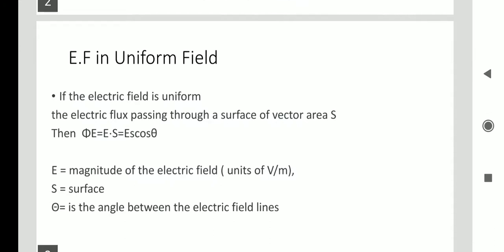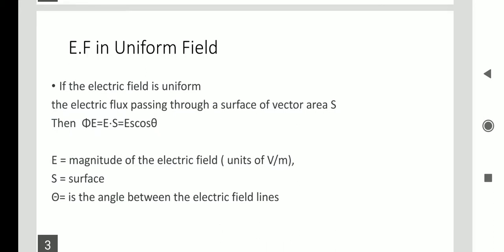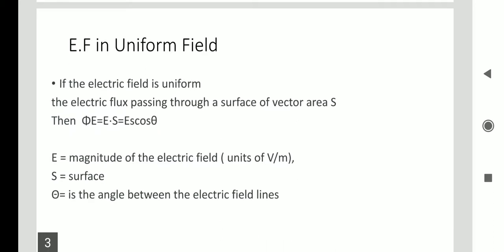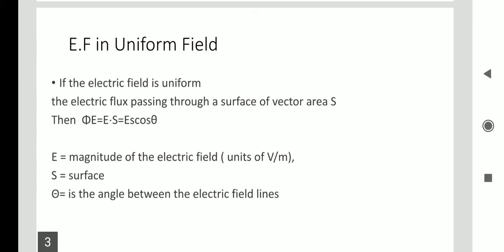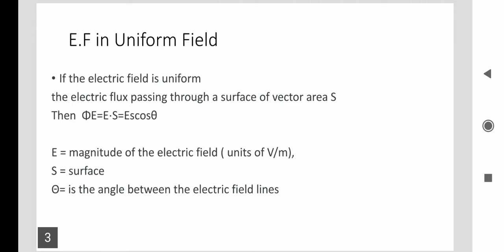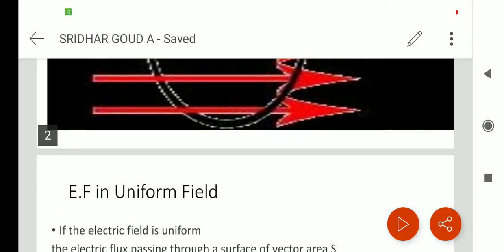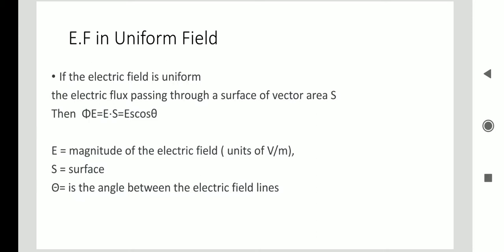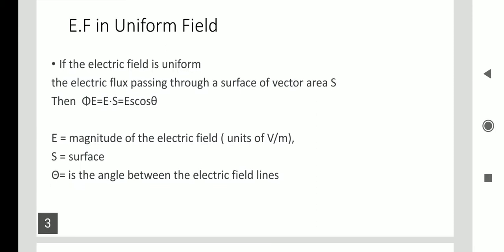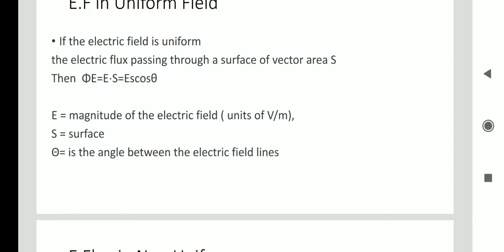In a uniform field the electric flux is considered as phi-e, where phi-e equals E dot S, which equals E·S·cos(θ), where theta is the angle between the electric field lines and the surface. S is the magnitude, and the units of electric field are volts per meter.